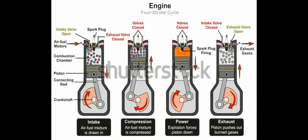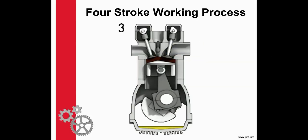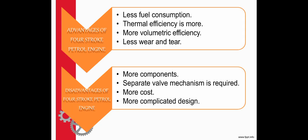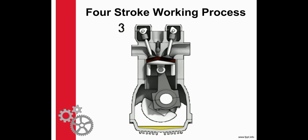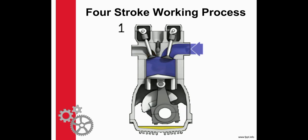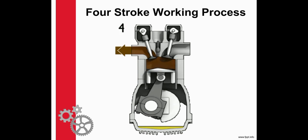Here we can see an elaborated view of the four steps. In the intake stroke, the inlet valve is open, the air-fuel mixture comes into the cylinder, and the piston moves downward. After that, in compression, the piston moves upwards. In the third step — the power stroke — both valves are closed, the spark plug ignites, and the material inside the cylinder starts to burn. Finally, the residues come out through the exhaust valve and the crankshaft is rotated. This is the working of the four-stroke cycle.